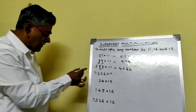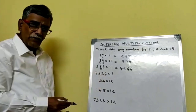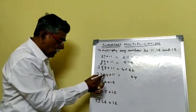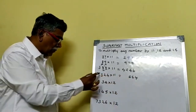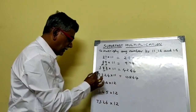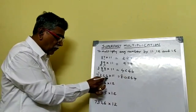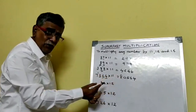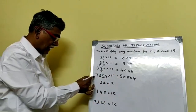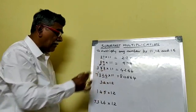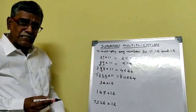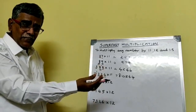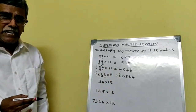Why not take a 4-digit number? Take 7,324 into 11. Write 4 as unit digit. Then 2 plus 4 is 6 — no carrying figure. Then 2 plus 3 is 5. Then 3 plus 7 is 10 — take 0, carry 1. Then 1 plus 7 is 8. So the answer is 80,564. For any number of digits, you can multiply by 11 this way: keep the unit digit, then take adjacent pairs moving left, and carry forward any balance.